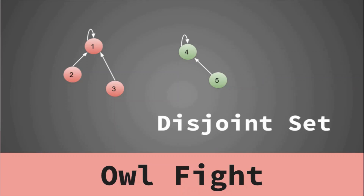Hello guys, this is Gordon Code and today we are going to look at the 7th lecture in the series of disjoint set data structures. In this lecture we are going to solve a problem called 'Owl Fight' taken from HackerEarth.